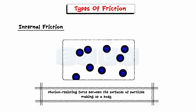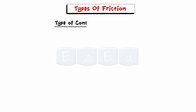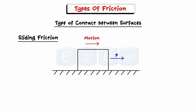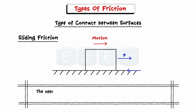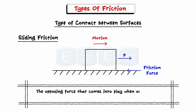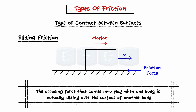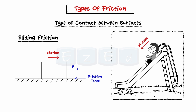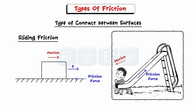Further, friction can also be divided into the following types based on the type of contact between surfaces. Sliding friction is observed when there is a sliding contact between two surfaces. It is defined as the opposing force that comes into play when one body is actually sliding over the surface of another body. For example, when a small kid tries to slide down on a park slide, the opposing force is called sliding friction.